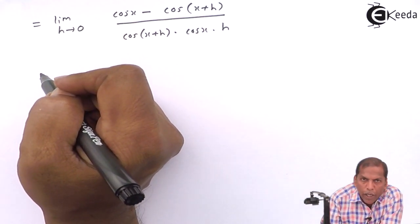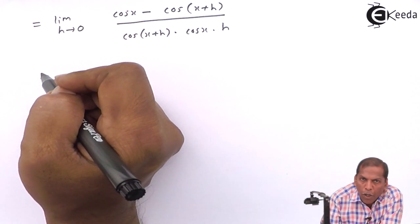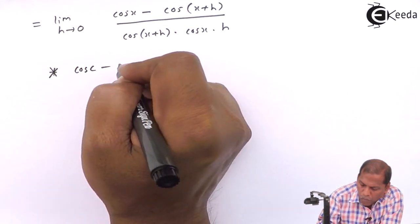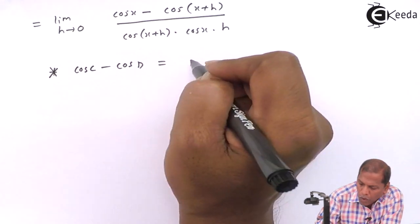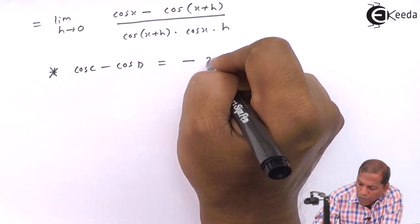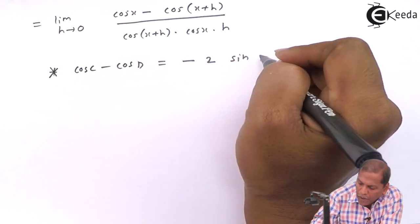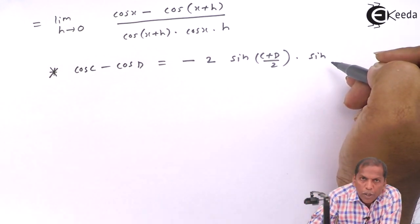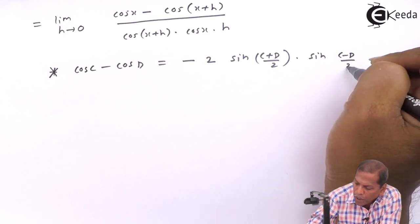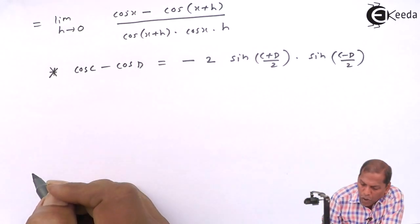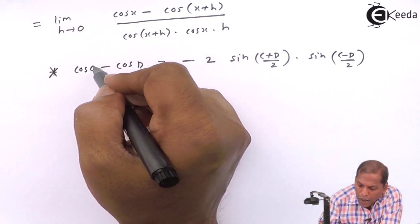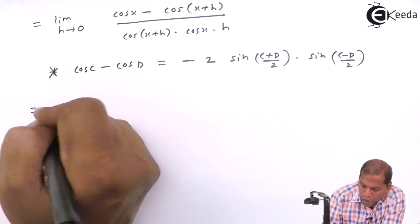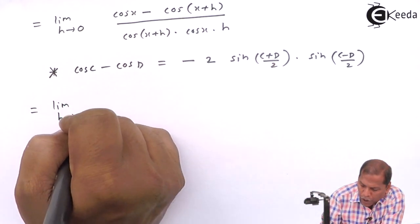In the numerator we apply the formula cos C minus cos D, which is equal to minus 2 sin in bracket (C + D) upon 2, into sin in bracket (C - D) upon 2. So in the present case C represents x and D represents x + h.